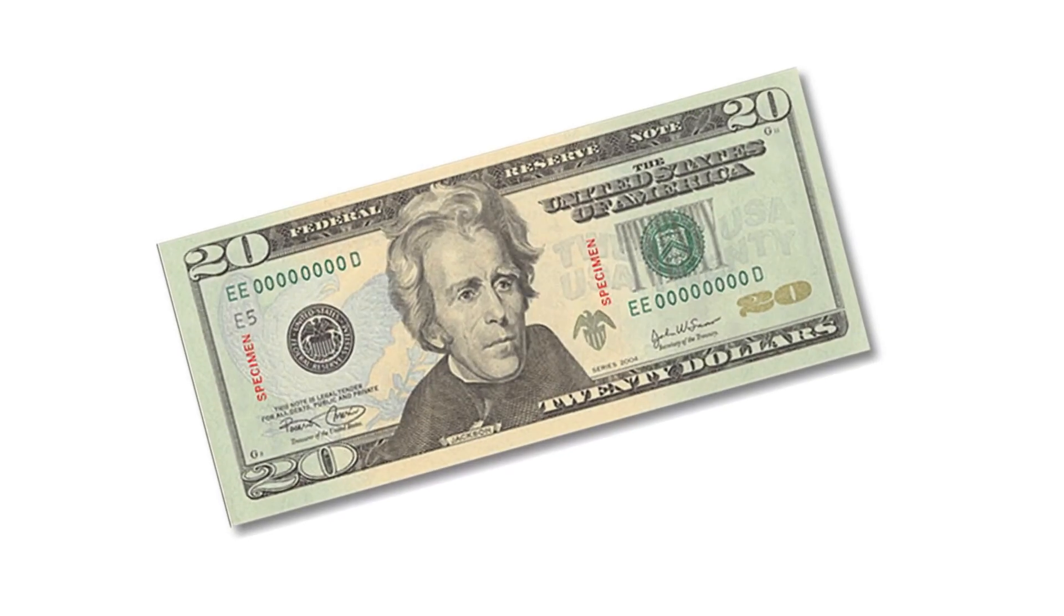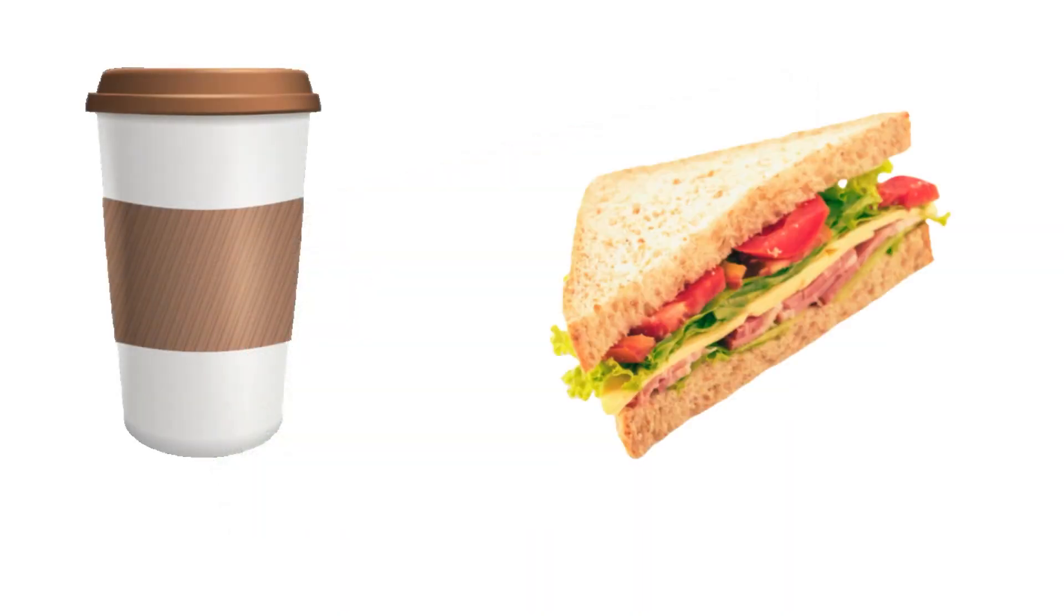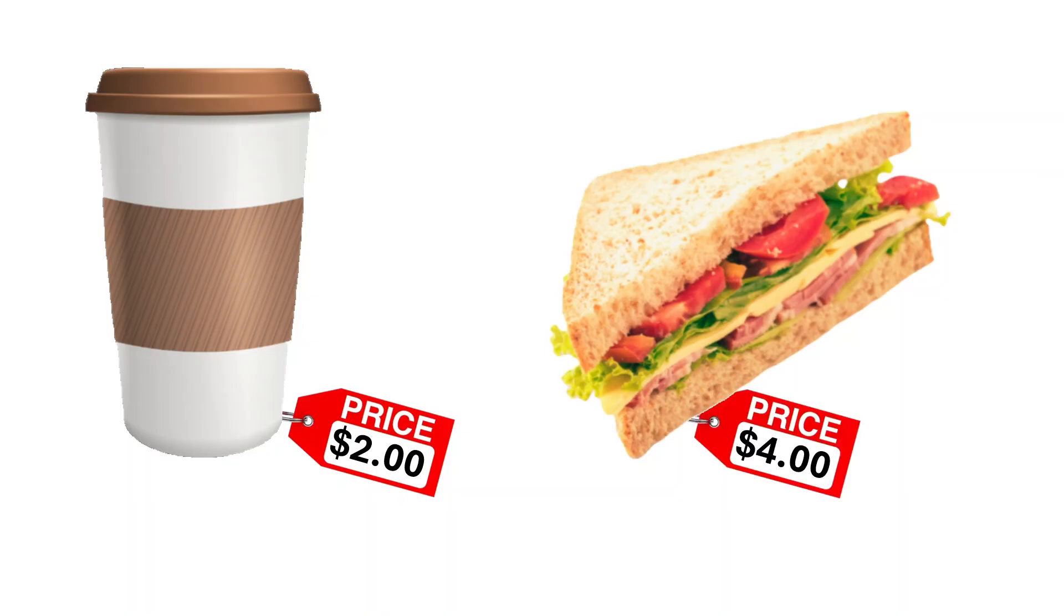Imagine you have a weekly budget of $20 and you are spending it on just two things: coffee and sandwiches. Coffee costs $2 per cup and a sandwich costs $4 each. Since you have a limited budget and sandwiches are twice as expensive as coffee, you will need to make some choices.